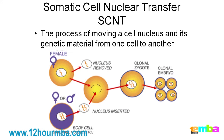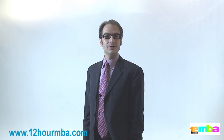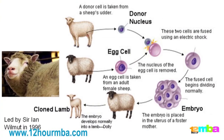In the diagram, we show a female and a male cell. The female nucleus is removed and the male cell nucleus is inserted, giving rise to a clonal zygote which can then develop into an embryo and therefore give rise to another species. Perhaps the most famous example of SCNT was led by Sir Ian Wilmot in 1996, when he created the very first cloned mammal, called Dolly the Sheep.